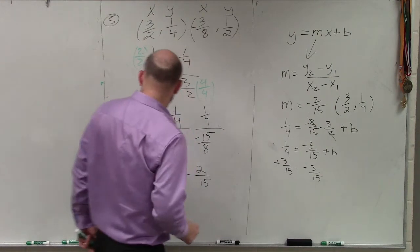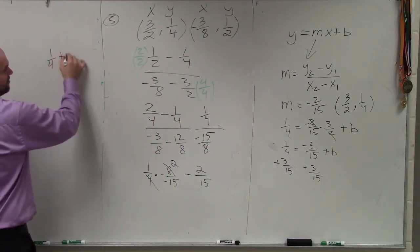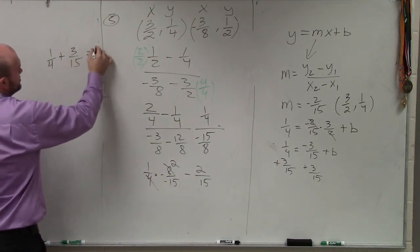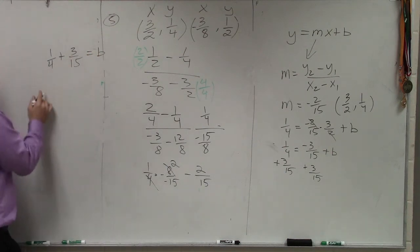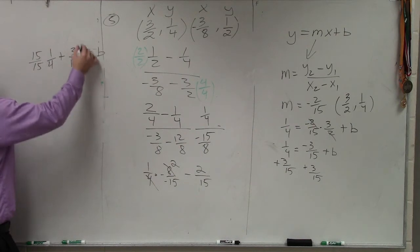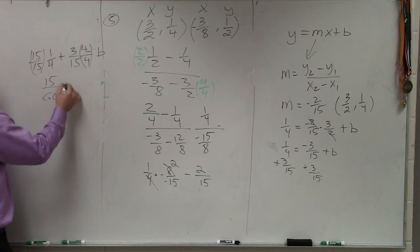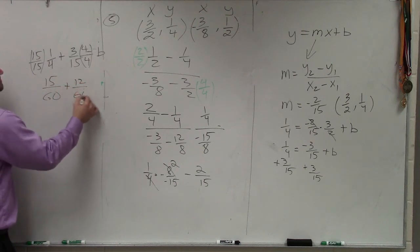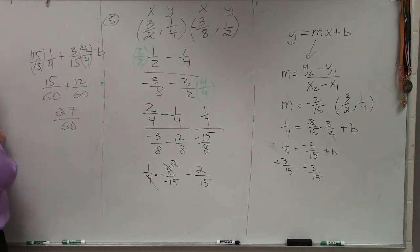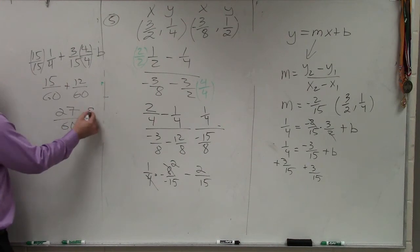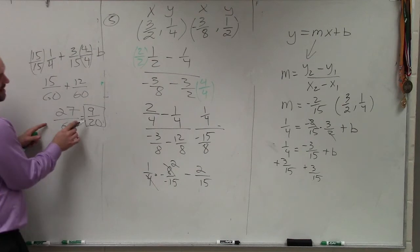And therefore, I have 1 fourth plus 3 fifteenths equals b. To get common denominators, I've got to multiply by 15 over 15, 4 over 4, 15 over 60 plus 12 over 60 equals 27 over 60, which we can reduce. We can divide 3 on both of those, which would be 9 twentieths, as I simplify that. So that's my y-intercept.